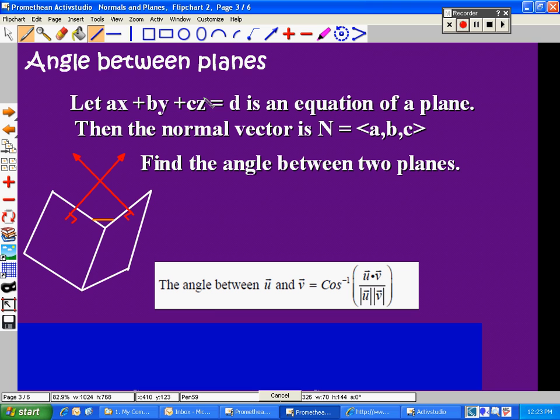Well, the angle between the two normal vectors is equal to the angle between the two planes. So if I can find the angle between the two normal vectors, then I have found the angle between the two planes.